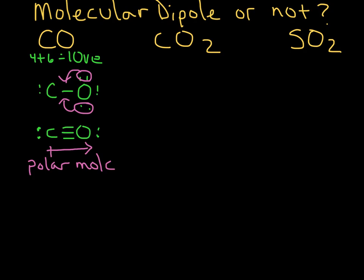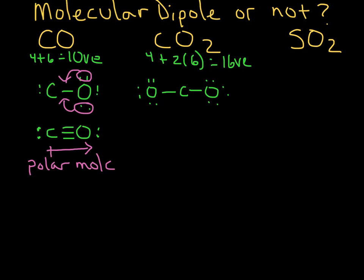Now let's look at carbon dioxide. We add up the valence electrons: 4 for carbon and 2 times 6 for oxygen, giving us 16 valence electrons. Carbon is the central atom, so I bond each oxygen to carbon, using 4 electrons. After distributing all 16 electrons, carbon still doesn't have an octet, so we share lone pairs to form double bonds on each side. This gives us oxygen with two lone pairs and a double bond to carbon on each side. The shape is linear with 180-degree bond angles.